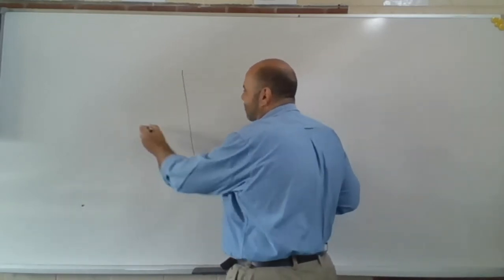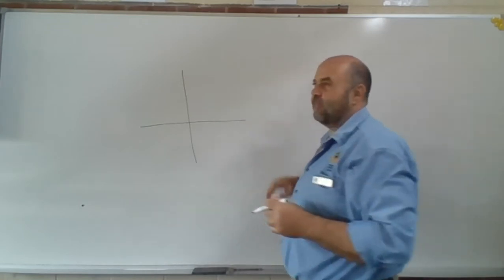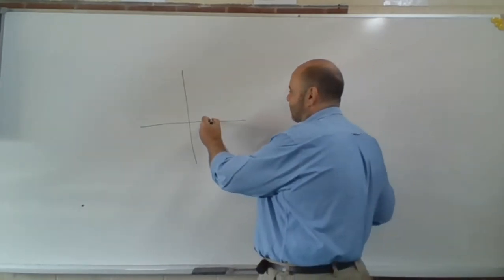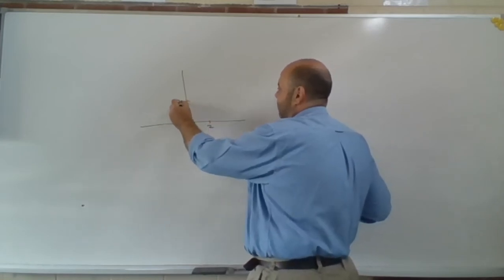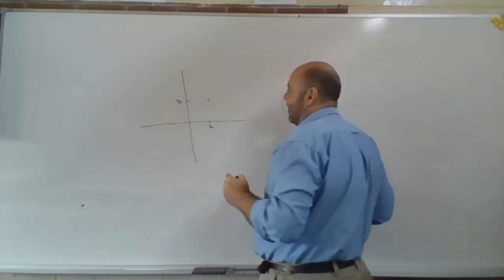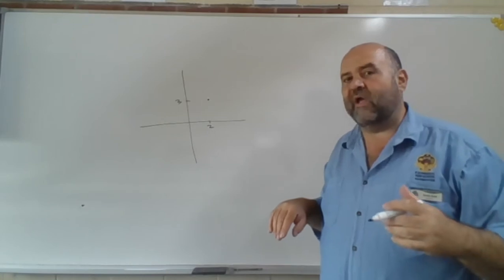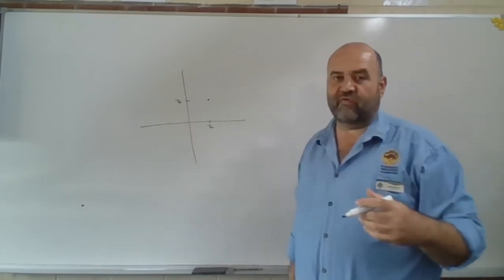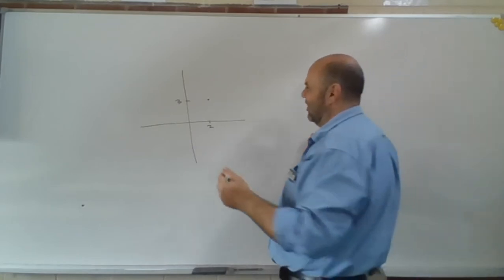So if I was to give you just in normal coordinate geometry, if I was to pick the point (2, 3), and I said that I wanted the equation of the line that goes through the origin and the point (2, 3), well, that's not too hard.